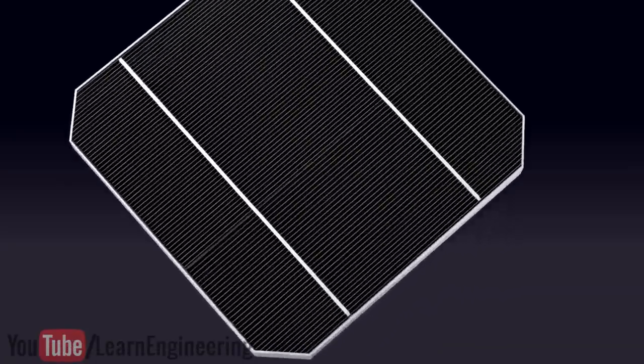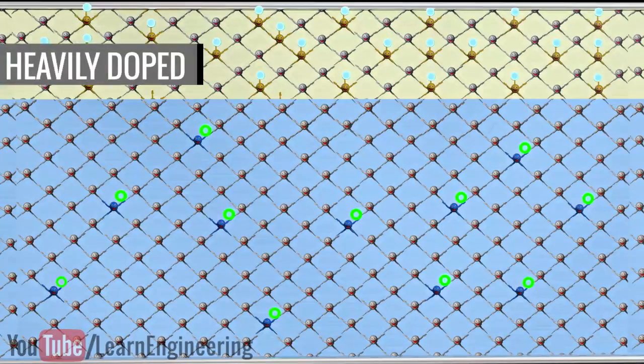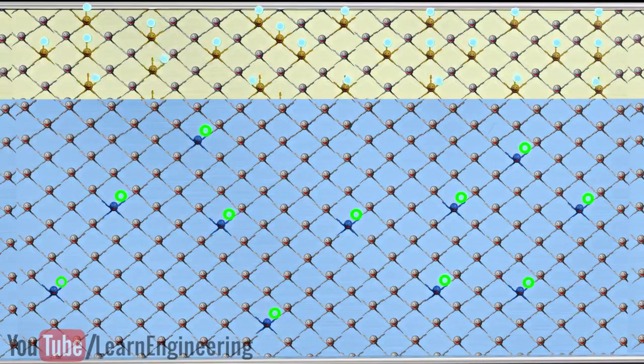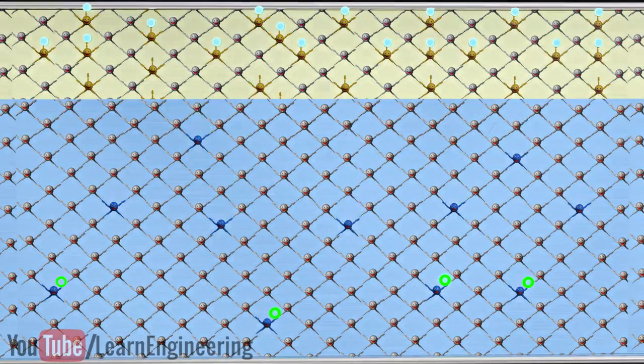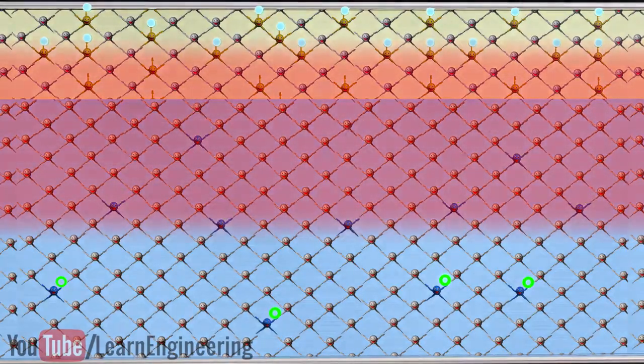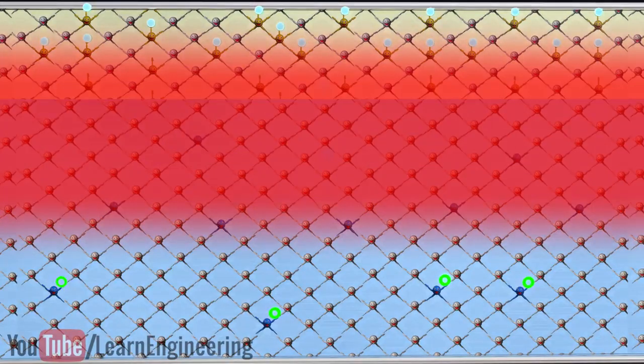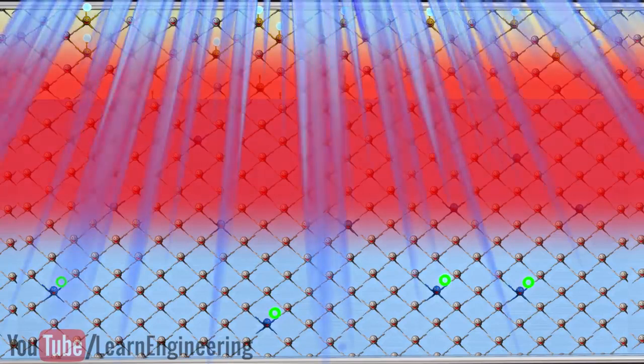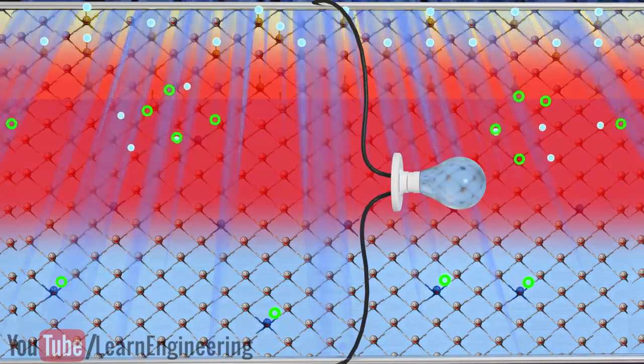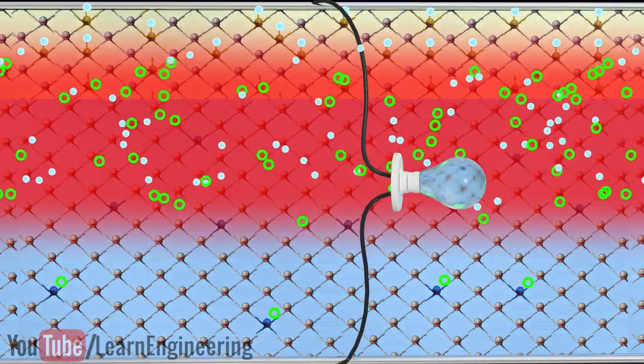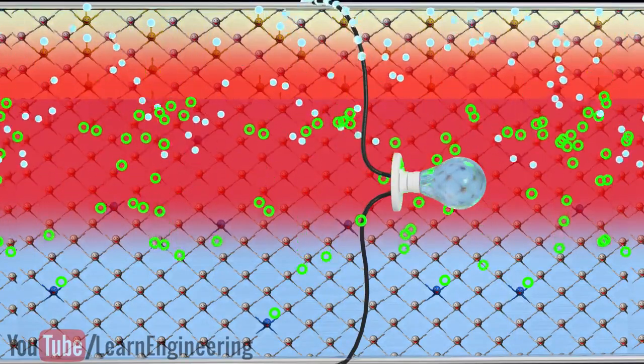In a practical solar cell, you can see that the top n-layer is very thin and heavily doped, whereas the p-layer is thick and lightly doped. This is to increase the performance of the cell. Just observe the depletion region formation here. You should note that the thickness of the depletion region is much higher here compared to the previous case. This means that, due to the light striking, the electron-hole pairs are generated in a wider area compared to the previous case. This results in more current generation by the PV cell.